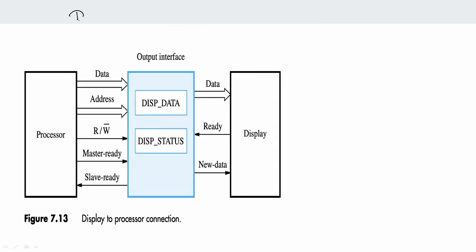Next is the Display interface. Comparing it to the keyboard, it is almost 80% the same. There is a processor, an interface, and a display. There is a keyboard on the display, and an encoding unit is additional. The arrow mark direction will be changed for output.